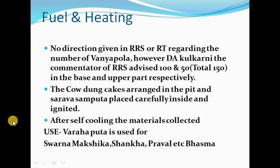No directions are given in Rasaratna Samuchaya and Rasaratna Rangini regarding the number of Vanyapala for Barahaputa. However, commentator Dattatreya Anant Kulkarni of Rasaratna Samuchaya advises a total of 150 Vanyapala — placed at the base and upper part respectively. The cow dung cakes are arranged in the pit, the Shravasam puta is placed carefully inside and ignited. After self-cooling, the materials are collected. Barahaputa is used for bhasma preparations of Swarnamakshika, Shankha, Prabhala, etc. Practically, 100 Vanyapala are placed at the base, the drug-filled samputa placed on top, and 50 Vanyapala cover it above.